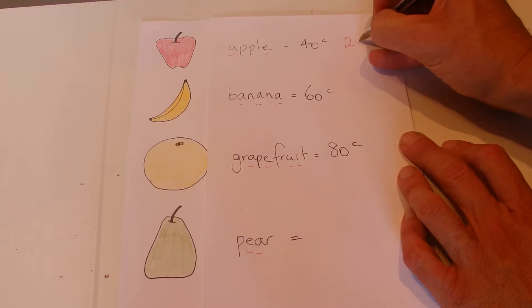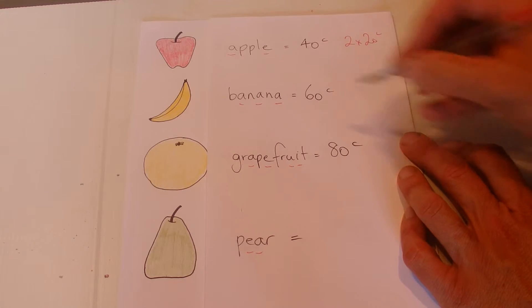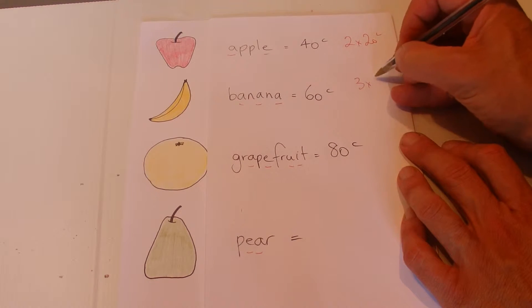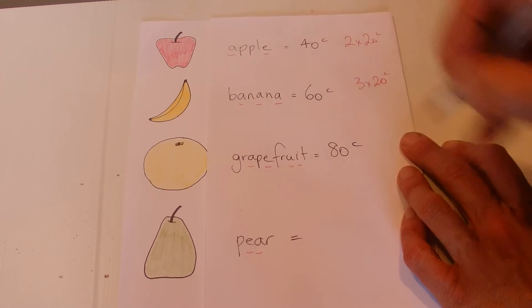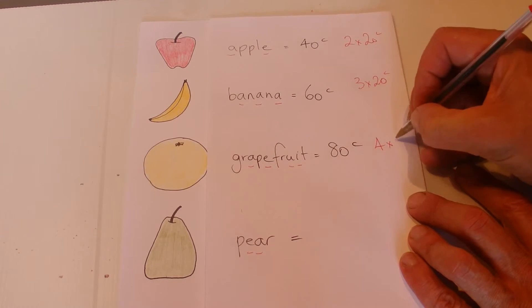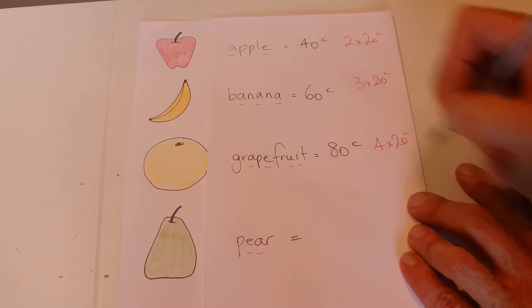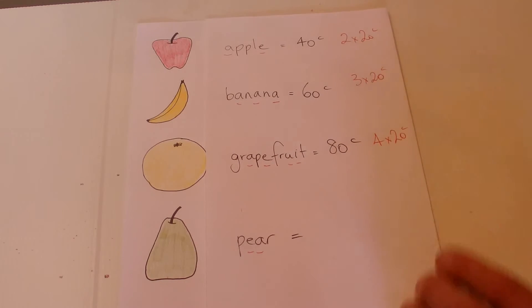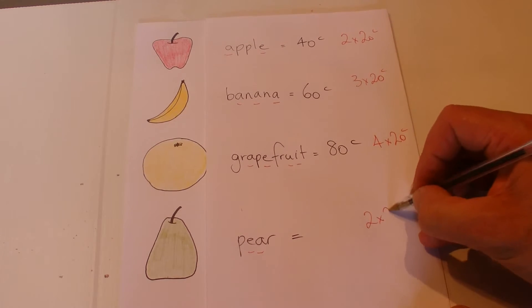Apple with two vowels is 2 times 20 cents equals 40 cents. Banana, three vowels, 3 times 20 cents equals 60 cents. Grapefruit, four vowels, 4 times 20 cents equals 80 cents. Therefore, pear with two vowels, 2 times 20 cents...